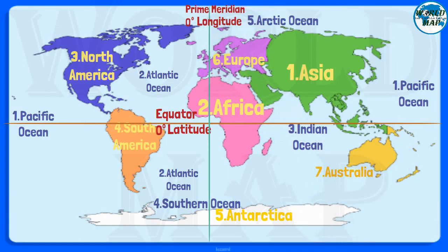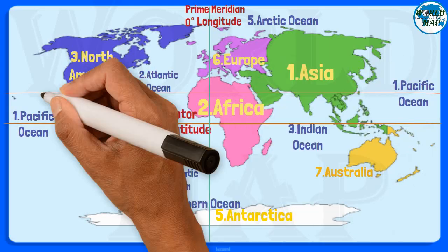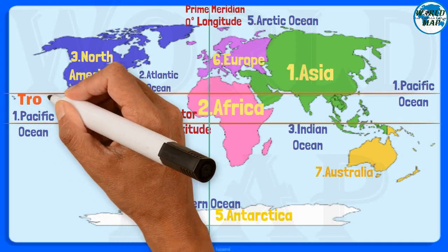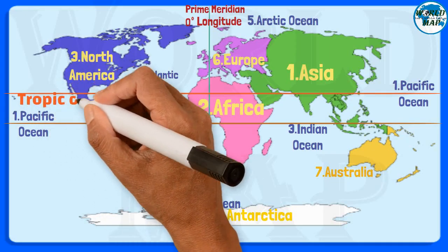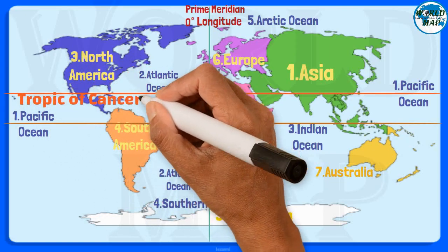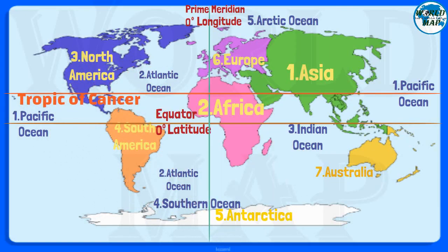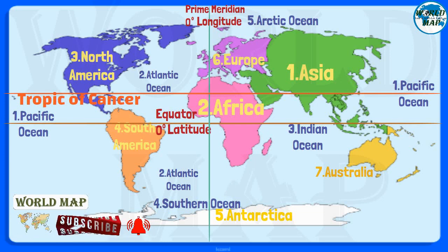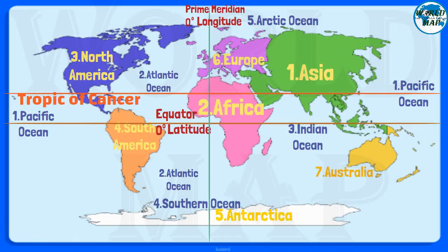Tropic of Cancer. The Tropic of Cancer, also known as the Northern Tropic, is the most northerly circle of latitude on Earth at which the Sun can be directly overhead. This occurs on the June solstice, when the northern hemisphere is tilted toward the Sun to its maximum extent.